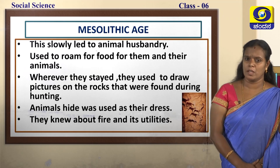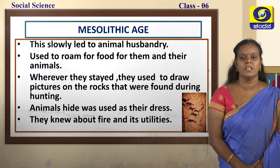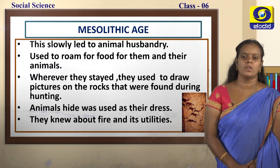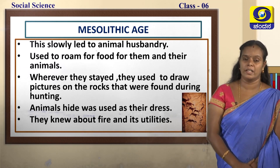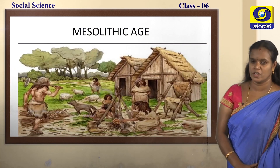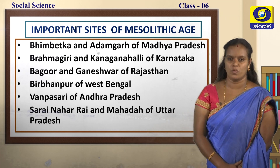In the Paleolithic age they covered their bodies with leaves and bark; now in the Mesolithic age, human beings learned to make dresses with the skin of animals. They also knew about fire and its utility — they knew how to use fire. In this picture you can see Mesolithic men covering their body with hide, rearing animals, and using fire. Animal husbandry had begun.